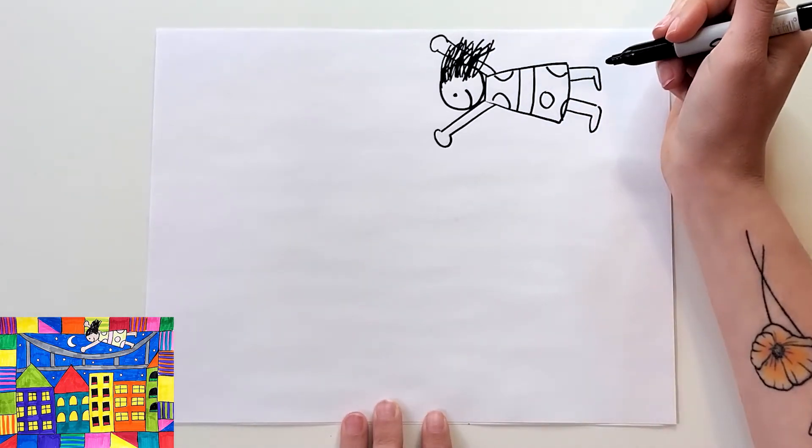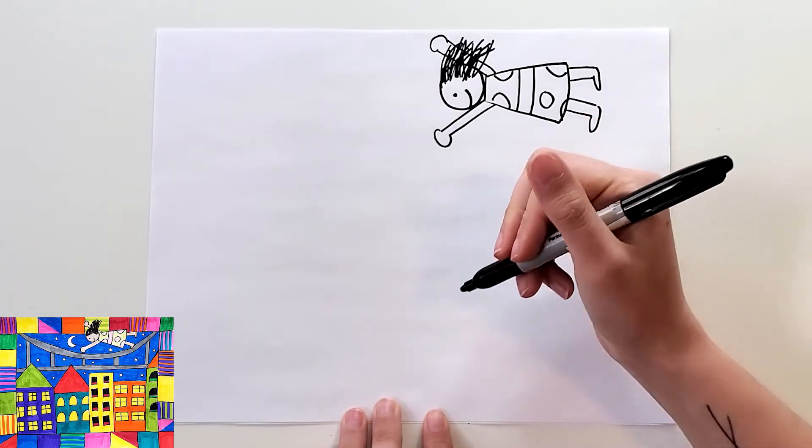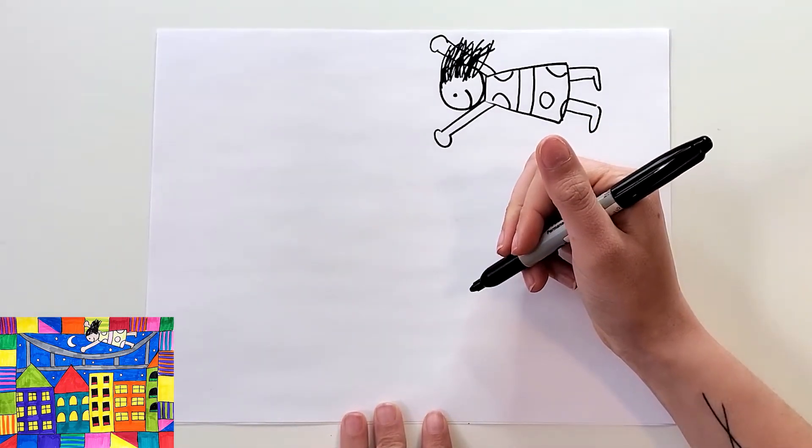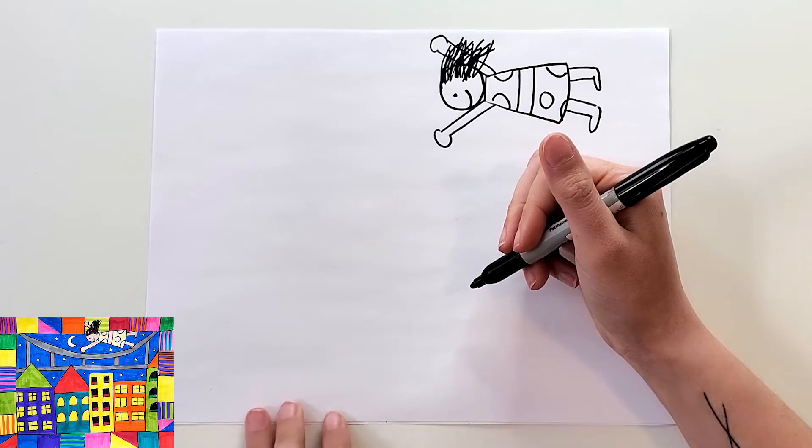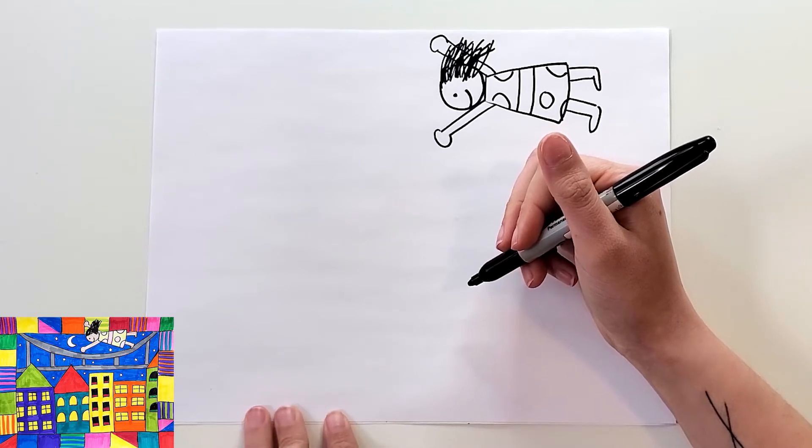Now we're going to make our border on our picture. If you have a ruler, it's a great idea to use one. I'm going to skip it for this one though, because I don't mind if it's a little wavy.